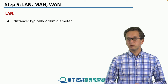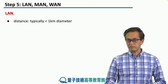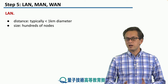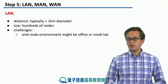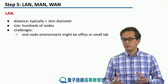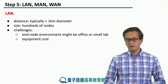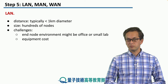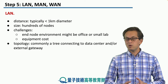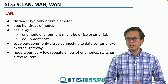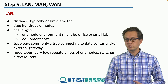Some specifics about local area networks. The distances covered are usually fairly small — typically less than one kilometer in diameter — and they include on the order of hundreds of nodes. The challenges are that the end node environment might be an office or a small lab, environments not particularly suited for high-tech equipment needed for quantum networking, and also the cost of the equipment. The topology is usually that of a tree connecting either to a data center or to external gateways. The node types included in a LAN usually have very few repeaters, but lots of end nodes and switches, and few routers.